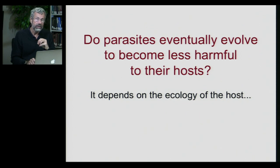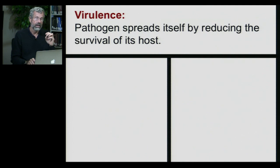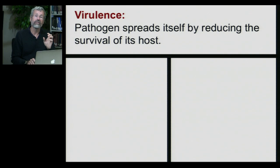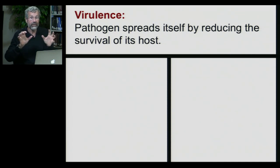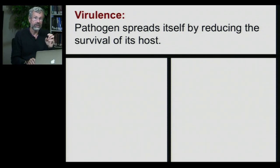It turns out that the answer depends on the ecology of the host. Let me give you a cartoon version of a very important concept: virulence. Virulence is when a pathogen spreads itself by reducing the survival of the host — by making you feel horrible, by shutting you down. It's kind of like sacculina turning its host crab into a robot to convert all of the resources into sacculina eggs. The pathogen harms its host in order to produce more copies of itself.